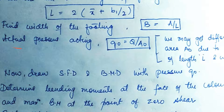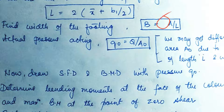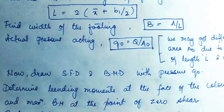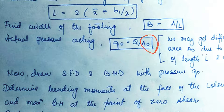Next, we find the actual pressure acting on the footing: Q0 = Q / A0. Here, A0 is not the originally computed area but the actual area after rounding off the length and width dimensions. So A0 = B × L using the rounded values. This gives the actual soil pressure that will be used for further design.